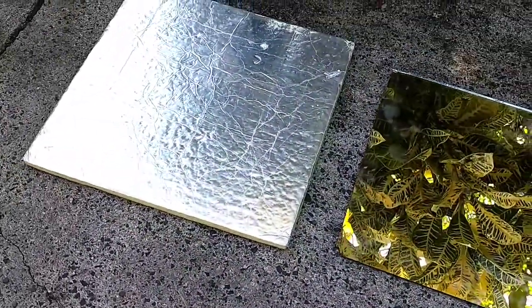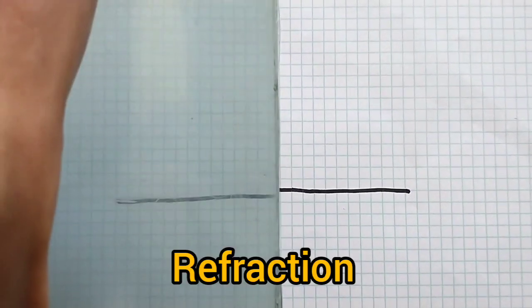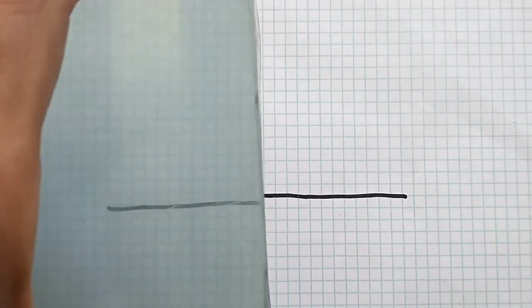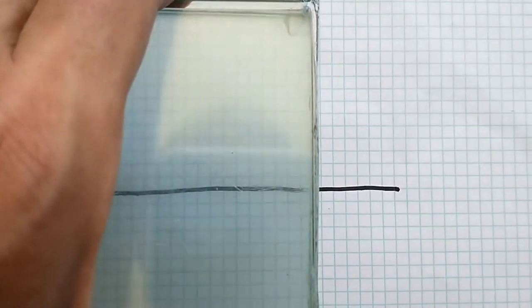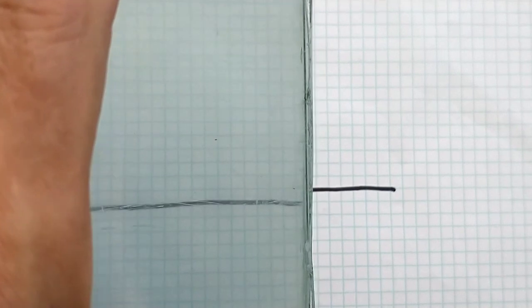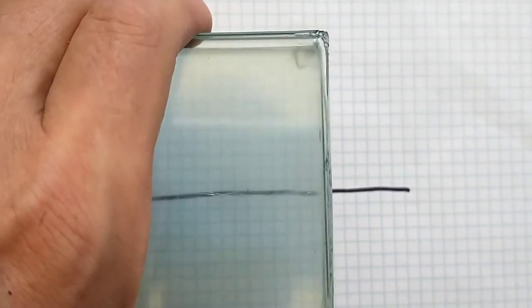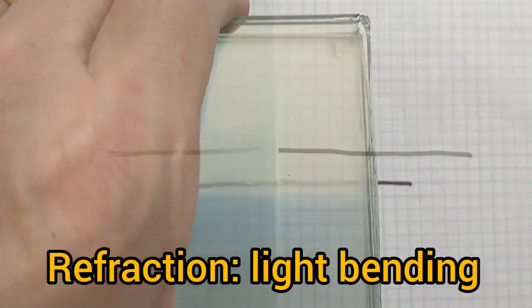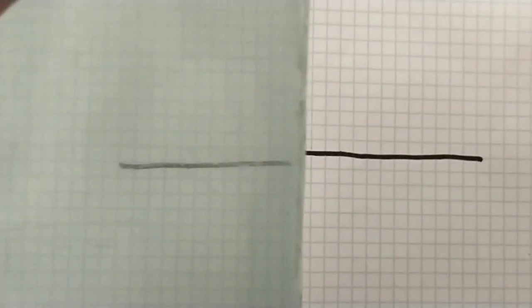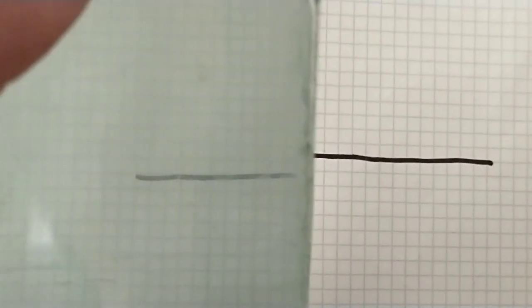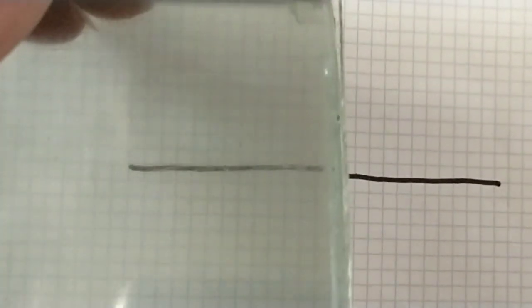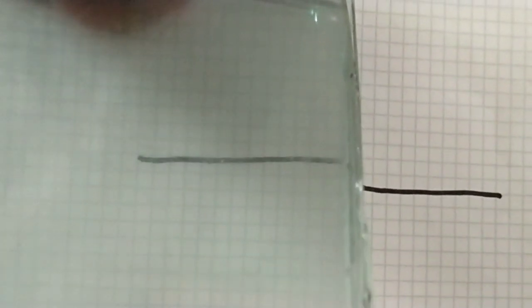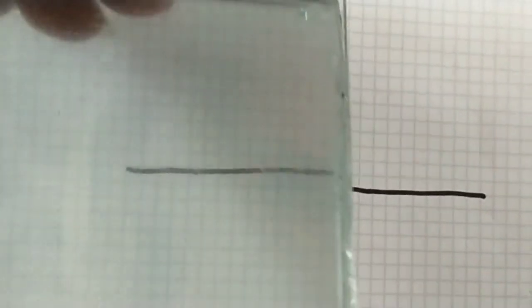Now refraction looks a little different. Watch this black line — I'm rotating a stack of glass panes from a louvered window. As I rotate them, the black line, which is one single black line, appears to break. The reason it appears to break is because of refraction: the glass is causing the light coming from the paper to bend, to not travel in a straight line. This is an effect of light being bent both as it enters and as it leaves the glass, which moves the light over slightly. This happens because the speed of light in glass is less than the speed of light in air.